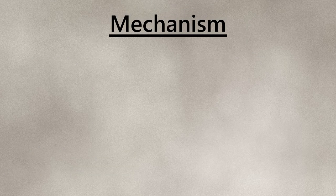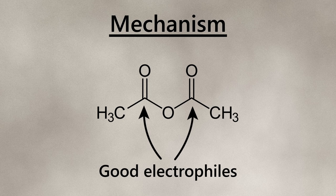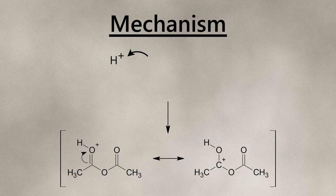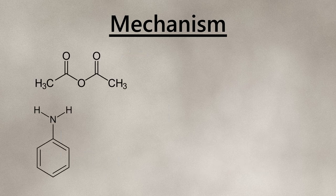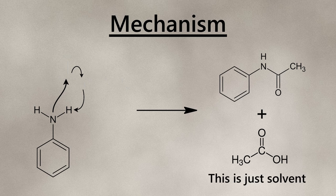Now let's quickly go over the mechanism. Acetic anhydride has a very electrophilic carbonyl carbon, and when protonated by an acid, this electrophilicity gets even stronger. Aniline will then attack this carbon and an acetate ion is kicked off. The acetate is then protonated, which forms acetic acid as the only byproduct, and since acetic acid is also the solvent for this reaction, this approach is very clean and easy to execute.